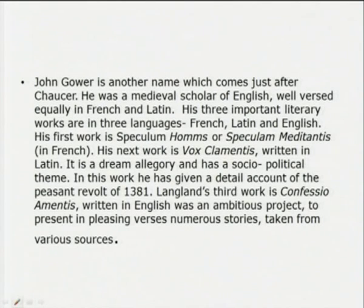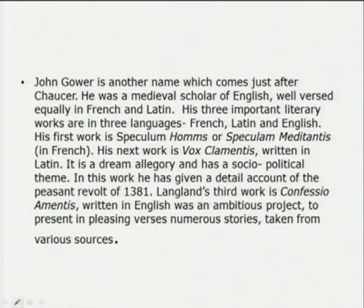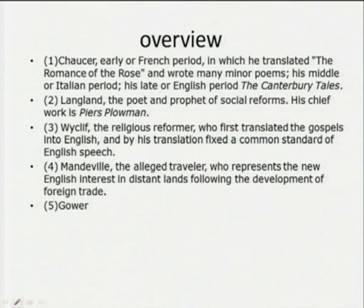John Gower is another name which comes just after Chaucer. He was a medieval scholar who wrote verse equally in French and Latin — a true linguist. What he wrote was in three languages: French, English, and Latin. His dream allegory was written in English, as was his Vox Clamantis. His third work is Confessio Amantis, written in English — an ambitious project to present, in pleasing verses, numerous stories taken from different sources.